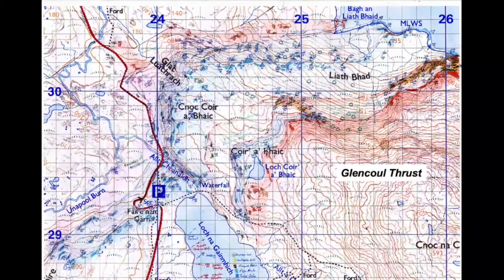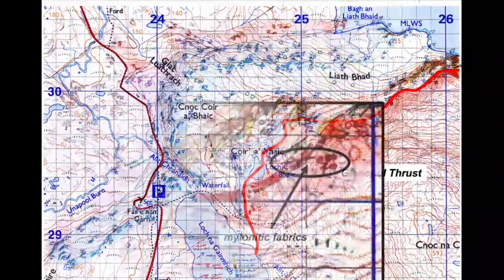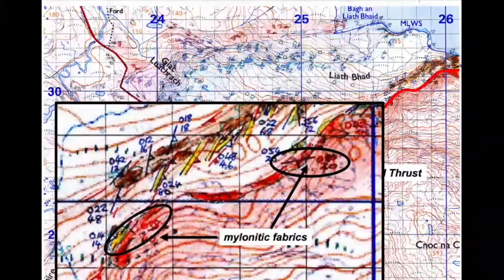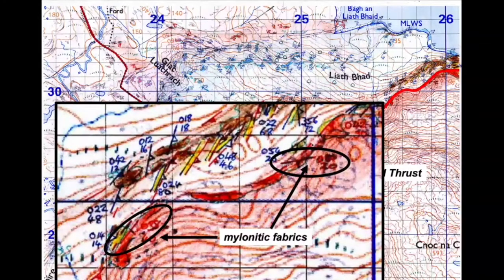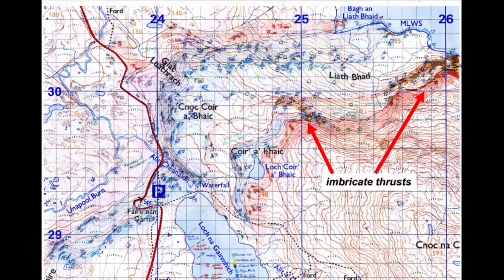There are other boundaries we can trace out as well. Here's the Glencoul thrust, which carries each sheet of Lewisian gneiss over the Cambrian strata. If we zoom in on the thrust here in the northern part, we can see that the map is decorated by measurements of mylonitic fabric along the thrust plane. There are also two areas of imbricate thrust — those imbricates continue through the map but are exposed well in two distinct patches.